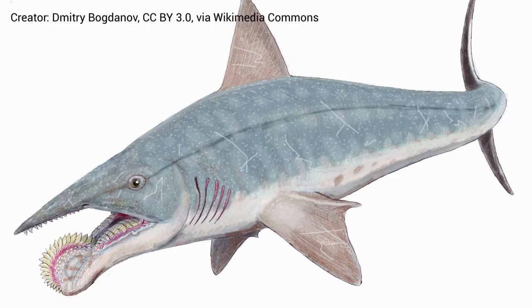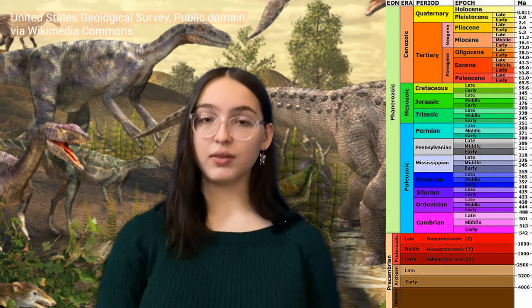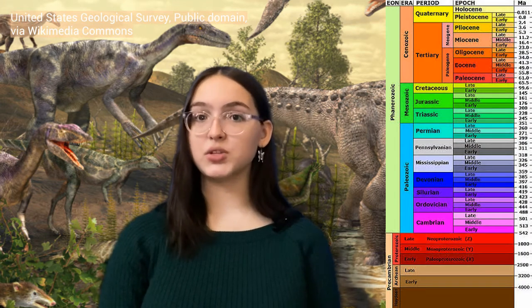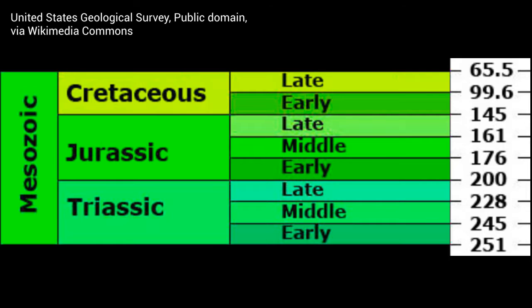Have you heard of animals like the Helicoprion or the Hybitus? These creatures lived during the Triassic period, the first period of the Mesozoic era, which began after the Permian-Triassic extinction. The Triassic period lasted from about 251 million years to 200 million years ago.